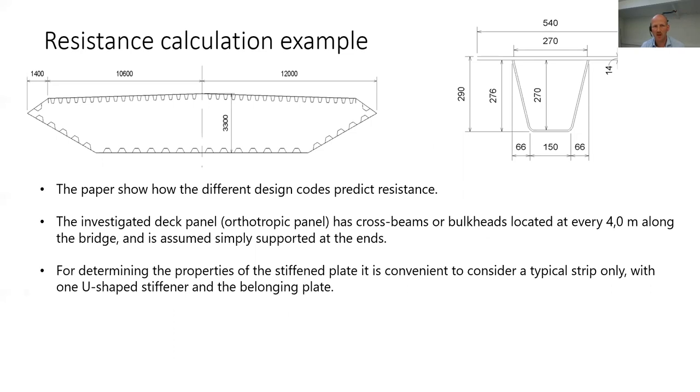This ended in a resistance calculation example which we are going to show in this paper. The paper shows how the different design codes predict the resistance for this top deck. The investigated deck panel has cross-beams or bulkheads located every 4.0 meters along the bridge and is assumed simply supported at the ends on these cross-beams. For determining the properties of the stiffened plate, it's convenient to consider just a typical strip only with one U-shaped stiffener and the belonging plate. That's the same cross-section we also used to predict the resistance from the codes.